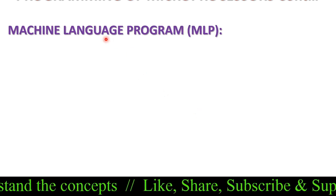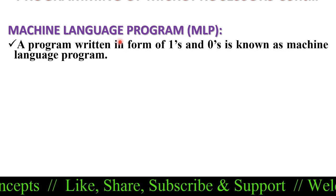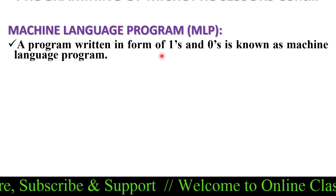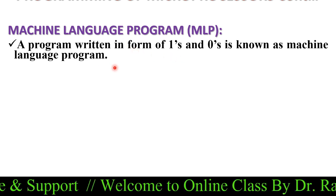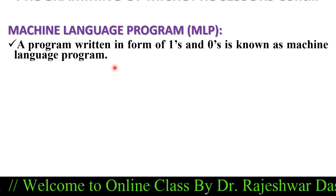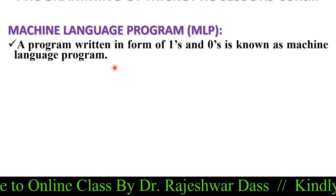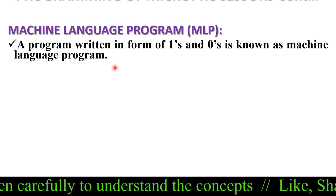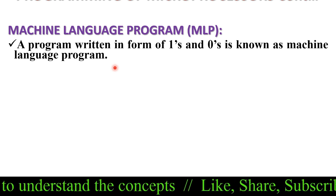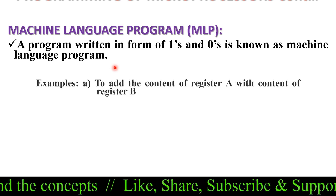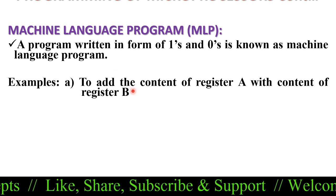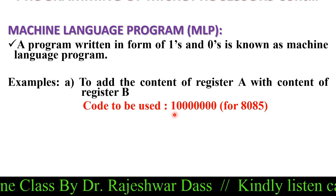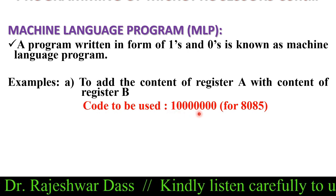A program written in the form of ones and zeros is known as a machine language program. The machine language is basically in the form of ones and zeros — binary form — which is the language the machine understands. For example, if we want to add the content of register A with the content of register B, then we use the code 10000000 00000000 for the 8085 microprocessor.